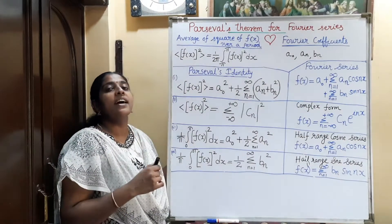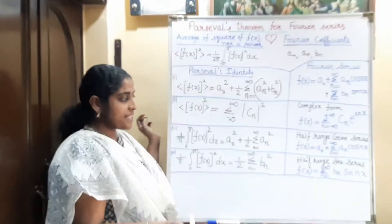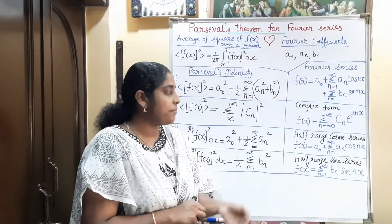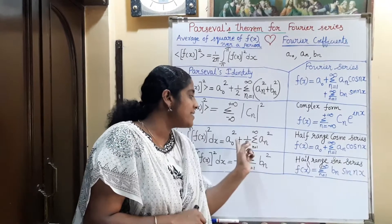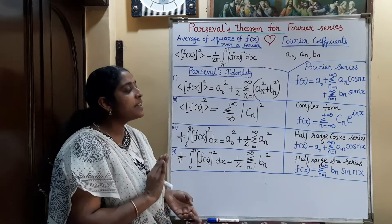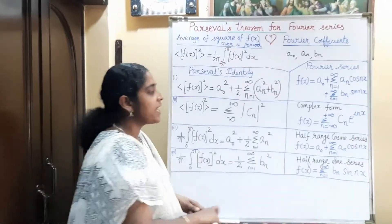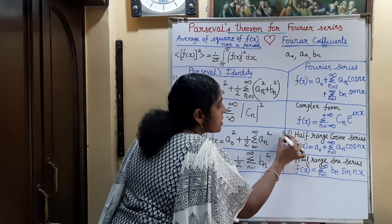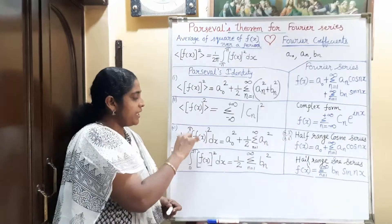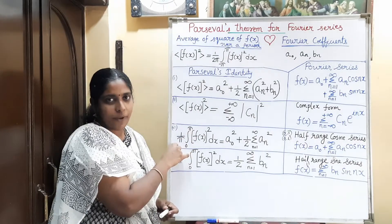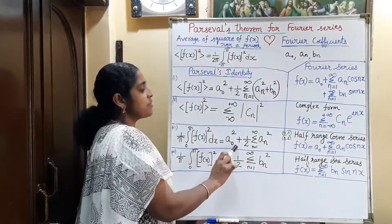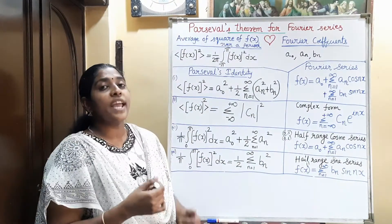The same Parseval's identity can be written for the half-range cosine and half-range sine series. For the half-range cosine series, f(x) = a₀ + Σ(n=1 to ∞) aₙ cos(nx), the average of the square of the function over a half period equals a₀² + (1/2) Σ(n=1 to ∞) aₙ². The difference is that for half-range series we take only a half period — from 0 to π or 0 to L — so the average is (1/π)∫₀^π or (1/L)∫₀^L.